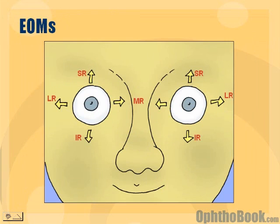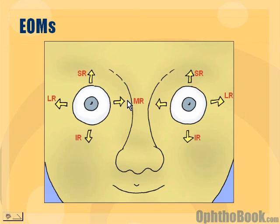If you look at extraocular movements for the eyes, you can think of the lateral rectus out here to the side, superior, inferior, and a medial rectus. So if that was all there was to eye anatomy, this would be easy. But the problem is it gets a lot more complicated, and here's why.